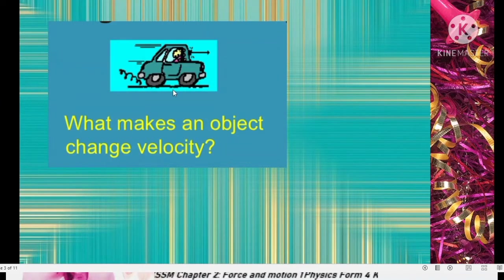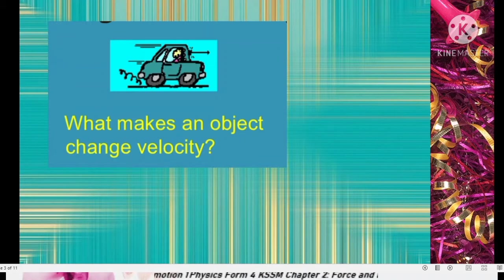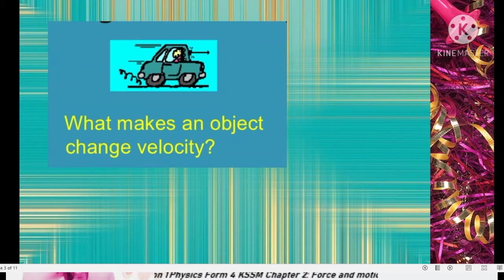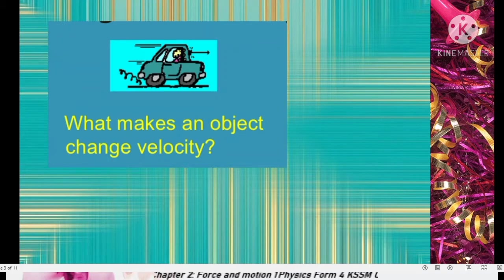This is a car that is moving at a certain velocity. What makes an object change velocity? If you are driving a car at a certain velocity and you want to change the velocity — for example, to increase or decrease it — you need to apply force. If you want to slow down, you step on the brake pedal, applying force. If you want to increase velocity, you step on the accelerator. There must be force applied in order to change the velocity of an object.